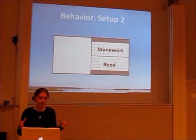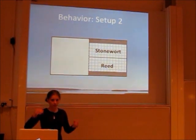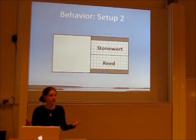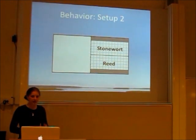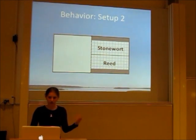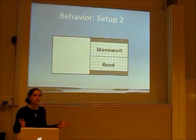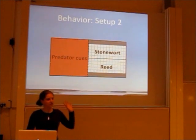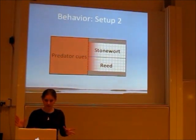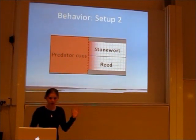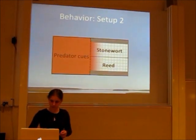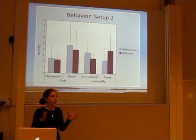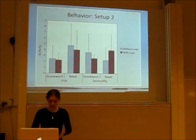In the second setup, the arena was part of a larger container, divided by a fine mesh net. There was the same type of grid on the bottom and activity was measured in the same way. They were observed for five minutes without cues, then cues were added to the large part of the container. Thanks to the fine mesh net, a gradient formed into the arena with a lower concentration of cues. In this setup there was no significant difference whatsoever for any factor in any treatment.